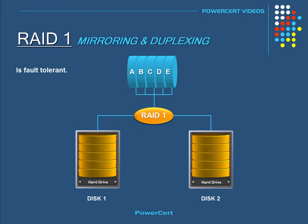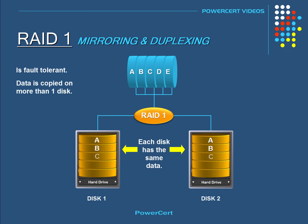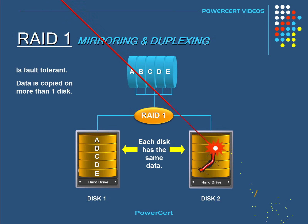Now RAID 1 is fault tolerant. In a RAID 1 setup, the data is copied on more than one disk, so disk 2 would have the exact same copy of the data as disk 1. So in the event of a single disk failure, such as getting destroyed by a laser beam, then no data loss would happen, because the other disk would have a duplicate copy.